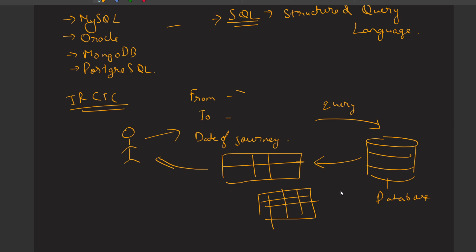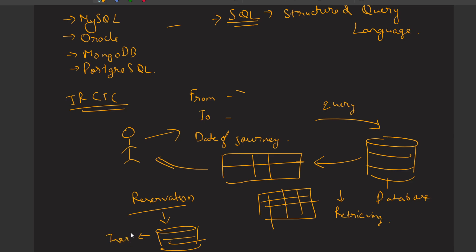This is what you can call a retrieve operation, because we are retrieving some information. If a person makes a reservation, his data will get inserted into the database - that is called an insert operation. If he cancels the reservation, the data stored in the database will be deleted - that is called a delete operation. If he updates the date of journey, that will be called an update operation. So these are the operations we perform using the database.